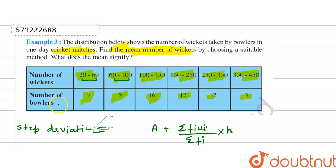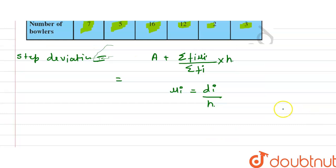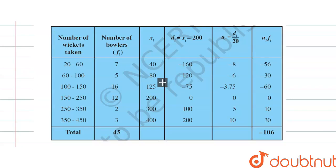The number of bowlers — 7, 5, 16, 12, 2, and 3 — represent fi. We now set up the tabular table. The number of wickets classes are: 20 to 60, 60 to 100, 100 to 150, 150 to 200, and so on, as given in our table.